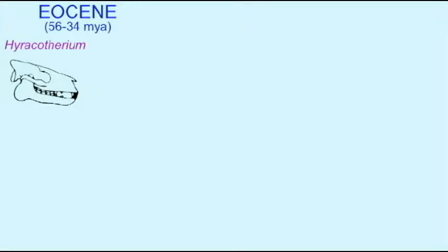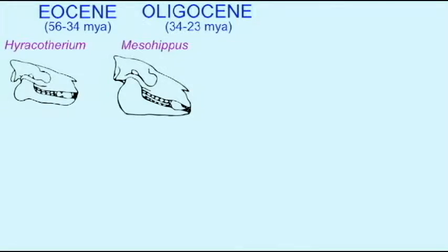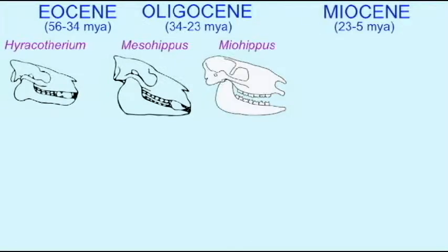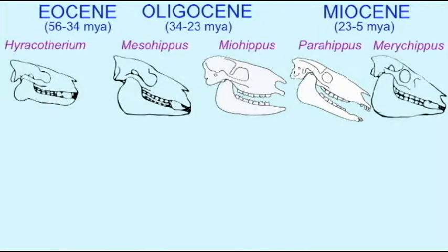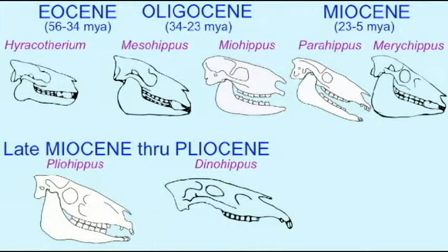When the age of mammals, the Cenozoic era begins, there are no horses nor had there been in the Precambrian, the Paleozoic, the Mesozoic. However, by the beginning of the Cenozoic era, there are ancestral mammals which begin to evolve the features of horses.